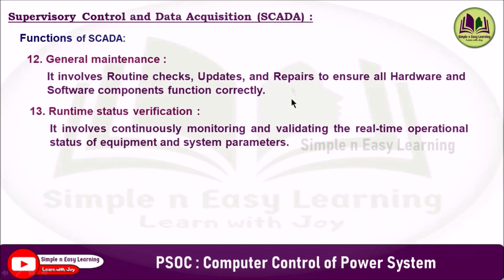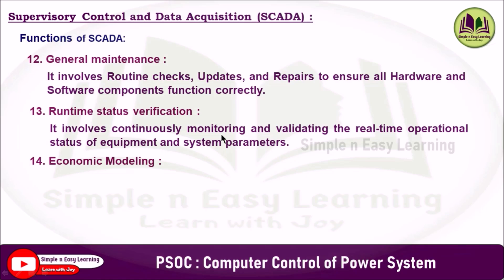The thirteenth function is runtime status verification, which involves continuously monitoring and validating the real-time operational status of equipment and system parameters. It ensures that devices such as circuit breakers, transformers, and generators are operating within their expected states and performance limits. This function helps detect anomalies or failures early, supporting timely decision-making and maintaining the overall safety and stability of the power system.